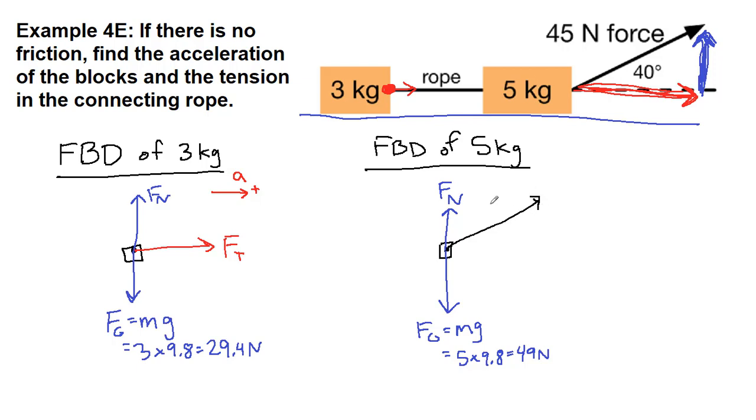When we draw it into our free body diagram, this might be our pull force of 45 newtons. Notice we're not pulling on the 3 kilogram block, that didn't go in over here. But we are going to have this 40 degree angle to deal with.